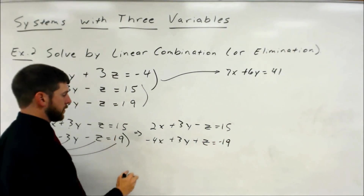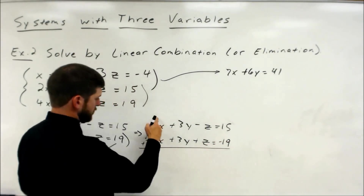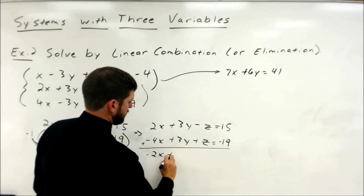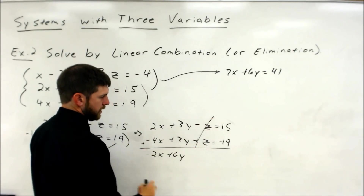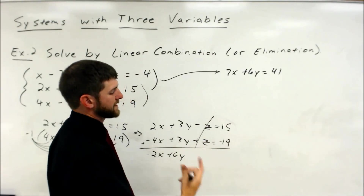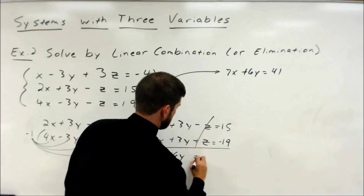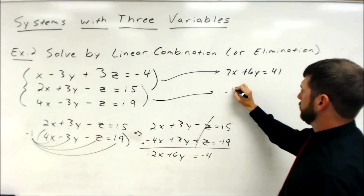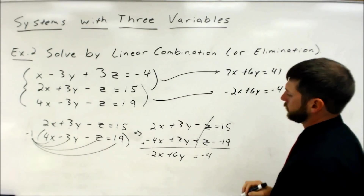From there we do our combination step. 2x and negative 4x is negative 2x. 3y and 3y is 6y. Negative z and positive z cancel each other out. And 15 plus negative 19 is negative 4. So the second grouping gives us negative 2x plus 6y equals negative 4.